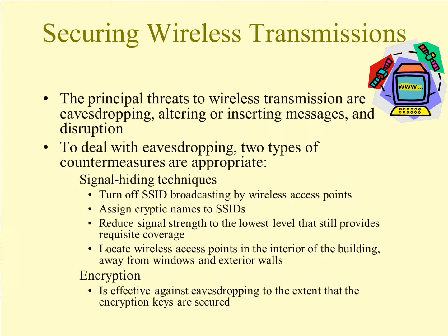This is different from administering a network at a coffee shop or airport where you don't want users to have to come talk to you before connecting. Assign cryptic names to SSIDs — don't use 'Linksys' but something uncommon, possibly with numbers, so it's harder to guess. Reduce signal strength to the lowest level that still provides requisite coverage. Locate wireless access points in the interior of the building away from windows and exterior walls to cover the building without broadcasting outside.